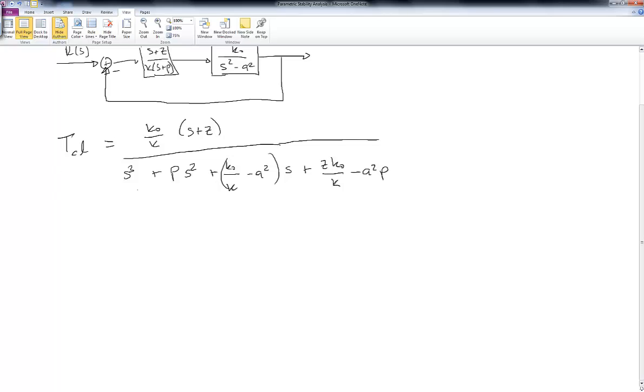Well, we can use the Routh-Hurwitz criterion to help us figure this out. And we can build our table. We have S to the third, S squared, S to the first, and then S to the zero.